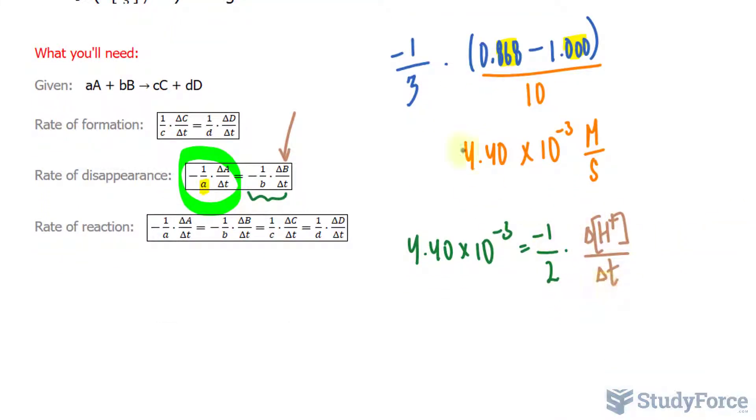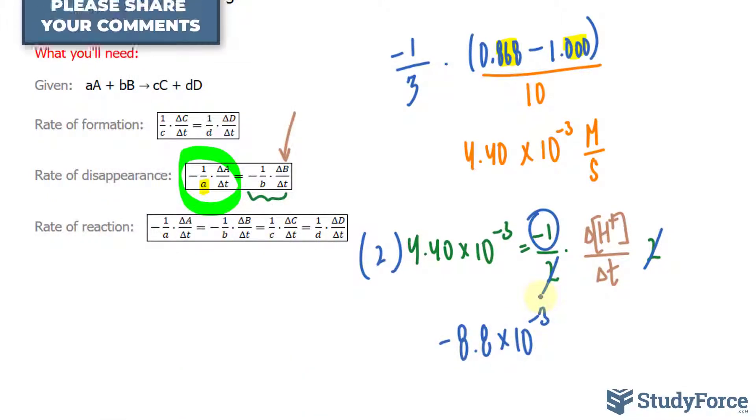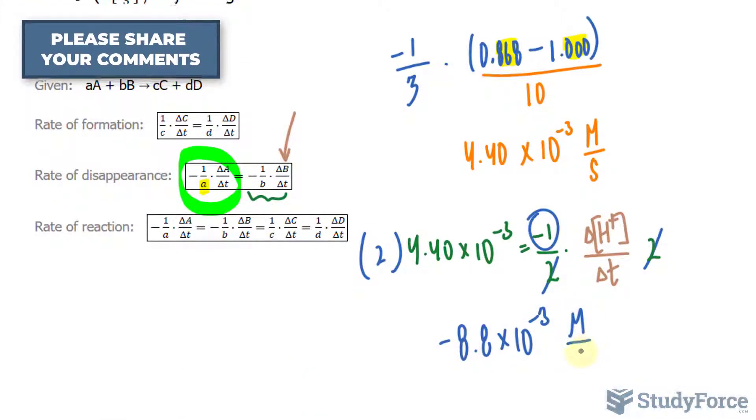We have to solve for this factor. And we can do that by multiplying both sides of this equation by 2. Watch. If I multiply the right side by 2, this 2 and this 2 will cancel out, leaving us with 2 times this factor. And we divide both sides by negative 1 to get rid of that negative 1 factor that remains. So let's go ahead and do that. We'll multiply this by 2 and then divide both sides by negative 1. And this gives us an answer of negative 8.80 times 10 to the power of negative 3. And remember the units, it's molars per second.